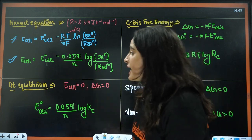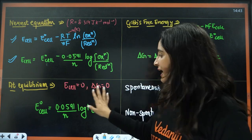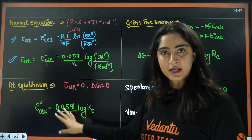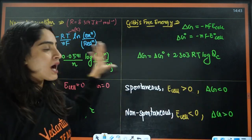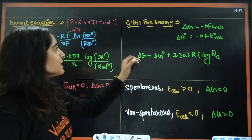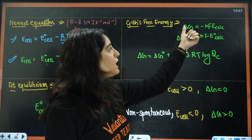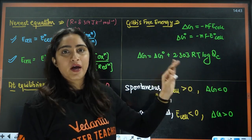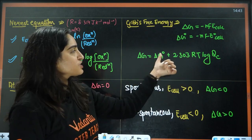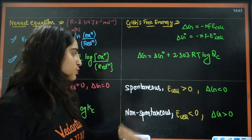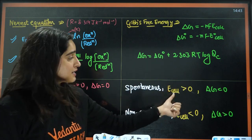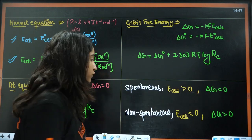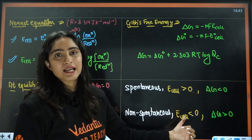Where R is the gas constant. At equilibrium, E cell equals 0 and delta G equals 0, so the formula becomes a relationship with the equilibrium constant K. This whole chart is very important — questions are asked from this. Next, Gibbs free energy: delta G equals minus nF times E cell, where F is one Faraday, that is 96500 coulombs. This is the relation between delta G and delta G⁰. For a spontaneous reaction, E cell is positive and delta G is negative. For a non-spontaneous reaction, E cell is negative and delta G is positive.